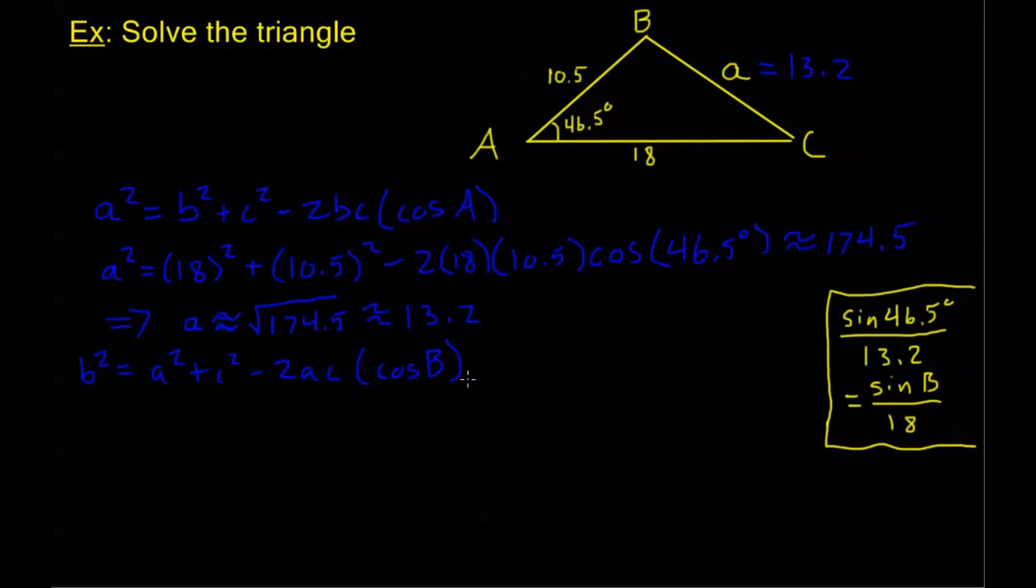Now we do a little bit of algebra here. I'll let you do this intermediary step on your own - make sure that when you work from this step to the next step, you get the same thing I have. Cosine of B is going to be a squared plus c squared minus b squared divided by 2ac.